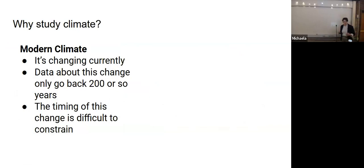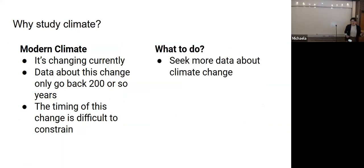Modern climate is changing currently. The science is settled. Data about this change, though, only go back about 200 years. We're only at the very beginning of climate change. So it's difficult to get at this problem to predict what will happen, because we've only had 200 years of experience, which is a geologic instance.